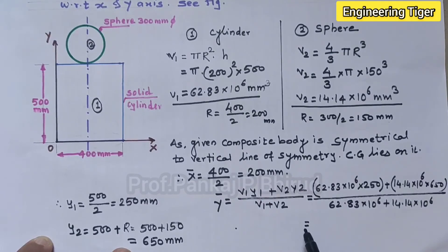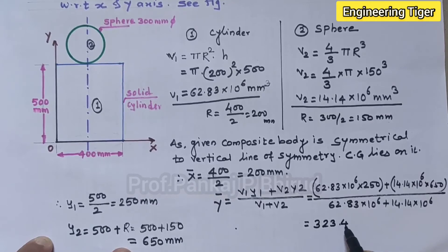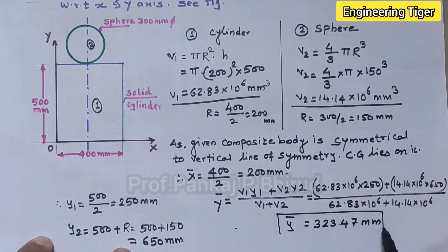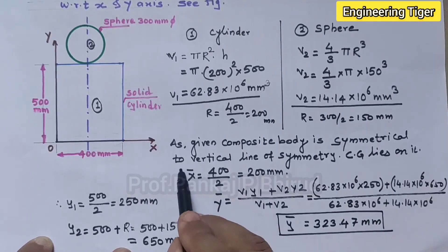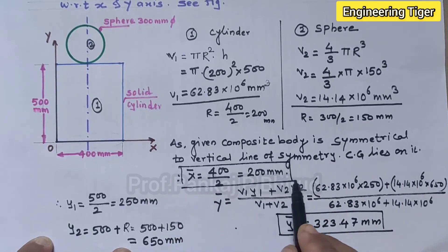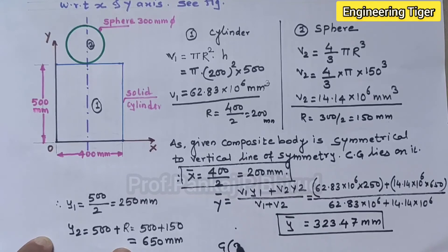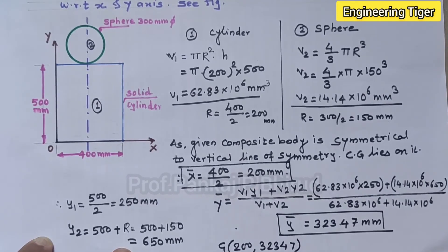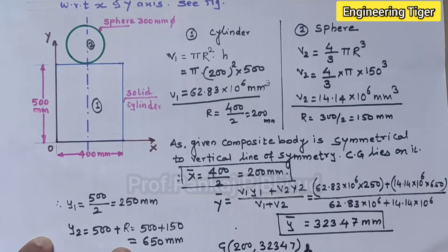So this is y bar. So x bar is 200 and y bar is 323.47 mm. So the CG at 200, 323.47 mm.